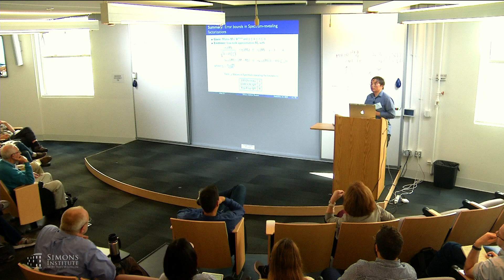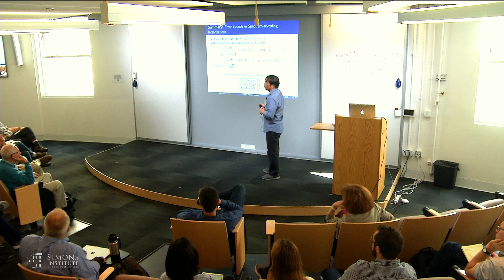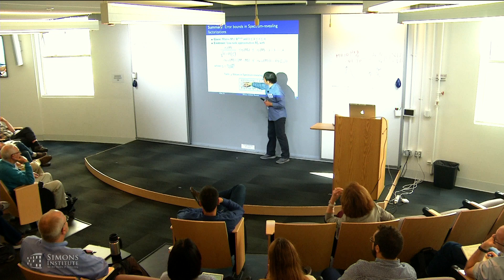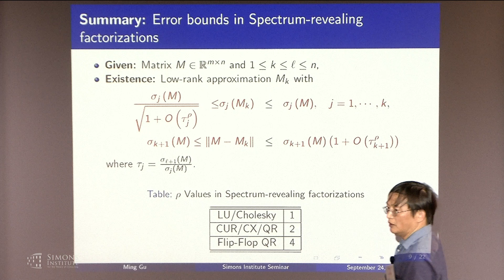For these types of spectrum revealing factorizations, are your pivoting rules the same as they are for rank revealing QR? Are you using different pivoting rules? For example, for the LU, right? It's basically like a LU with a column pivoting. I mean, with complete pivoting. But we have a way to compute this quickly. Typically, you don't do this, right? It's supposed to be slow.